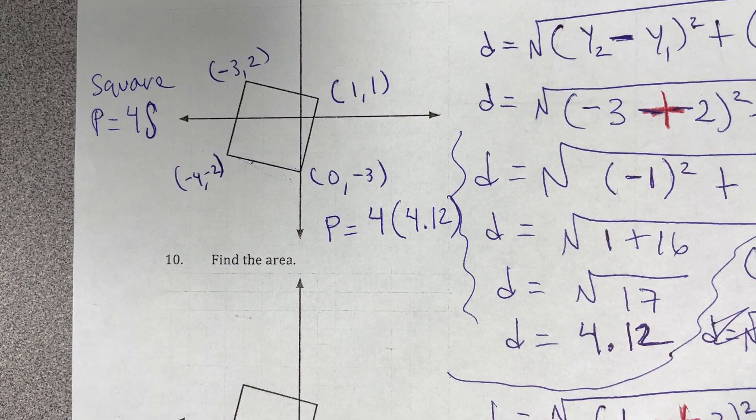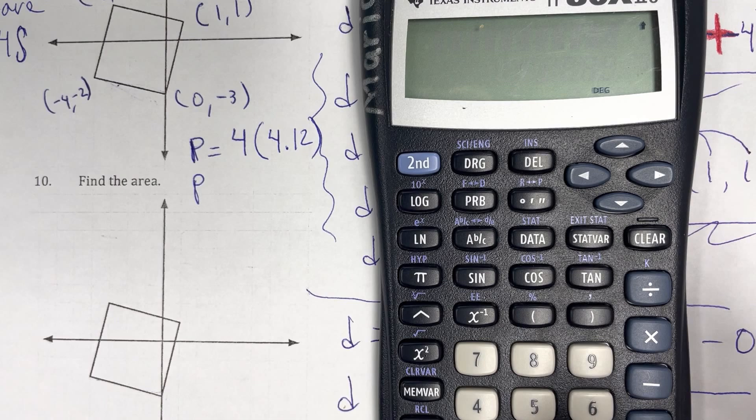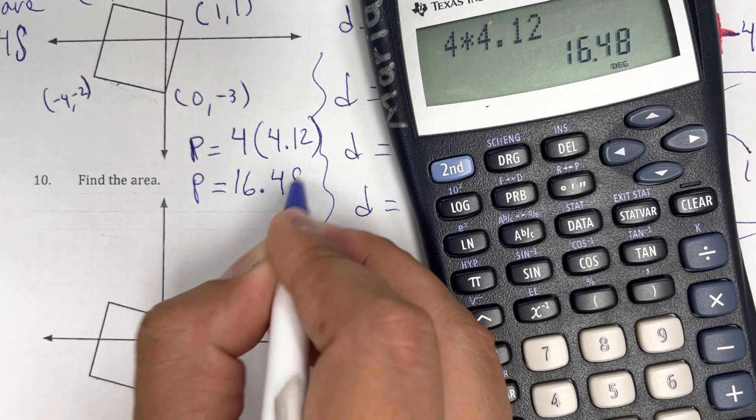Ahorita les voy a poner esta, pero si no, de todas maneras, hacemos con la fórmula que hemos estado aprendiendo para que no se confundan. So, 4 times 4.12 is equal to 16.48. 16.48 units.